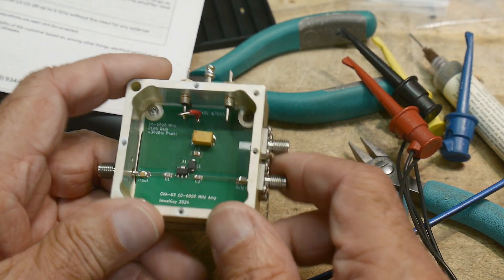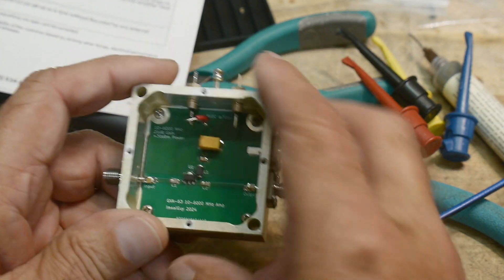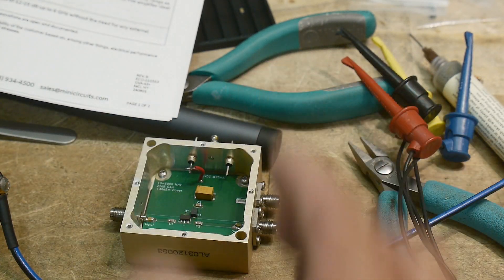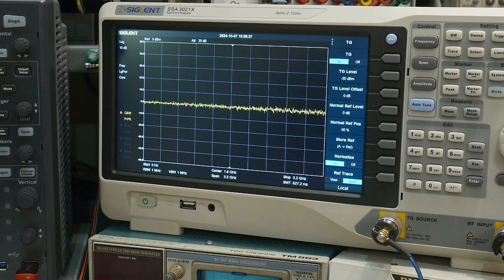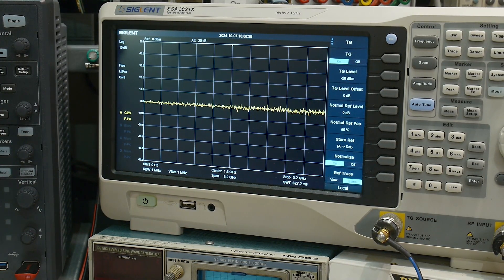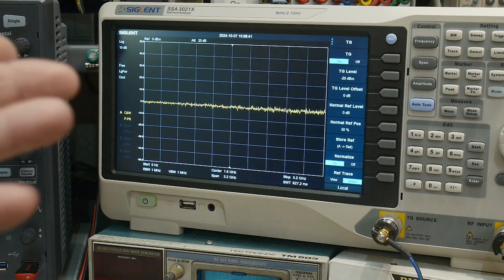So let's go ahead and hook it up. It is a 5 volt part so we're going to need 5 volts and we're going to be measuring the transmission of the device. It is a 6 gigahertz part. I can only go up to 3.2 so we're going to test it to 3.2.